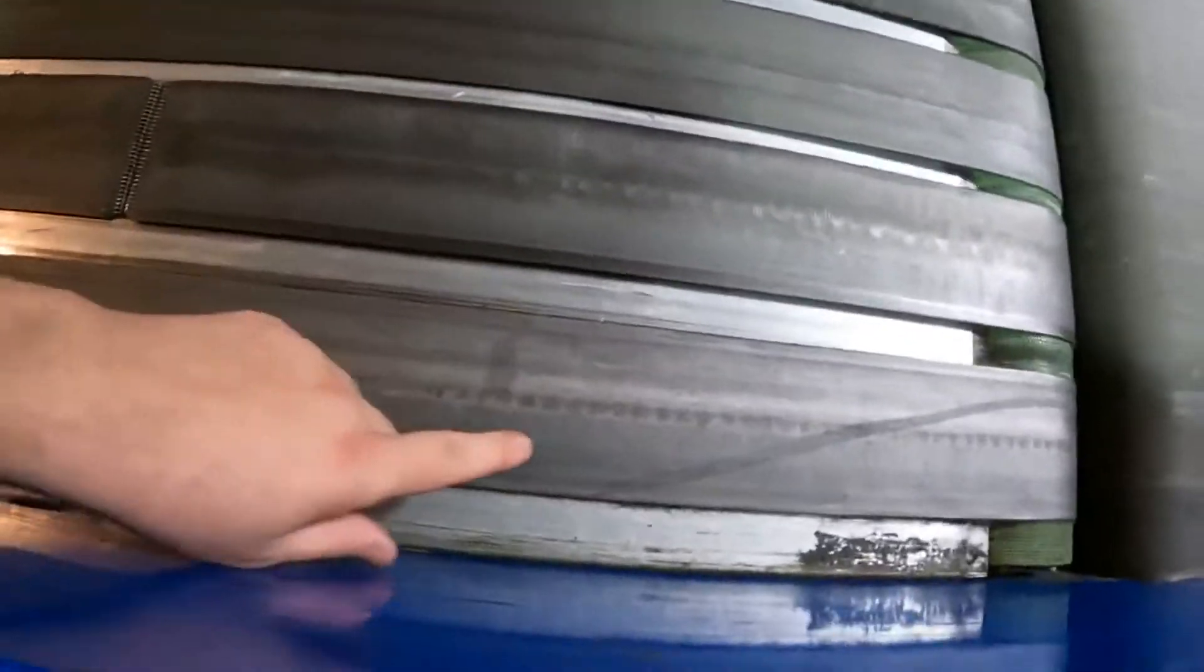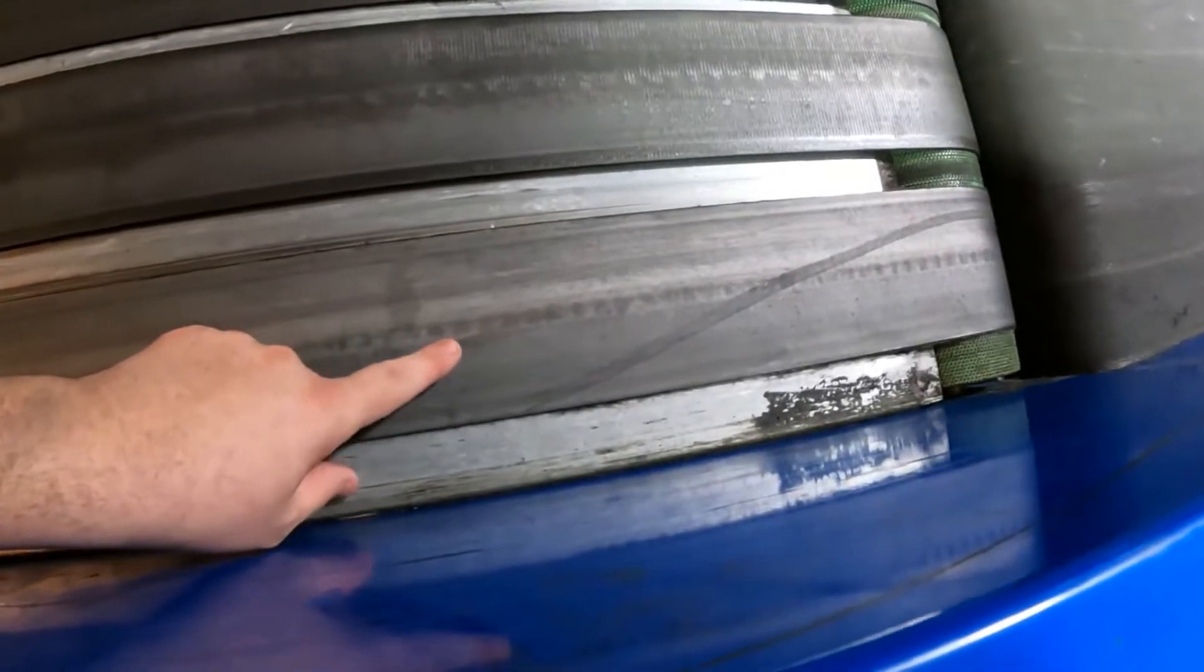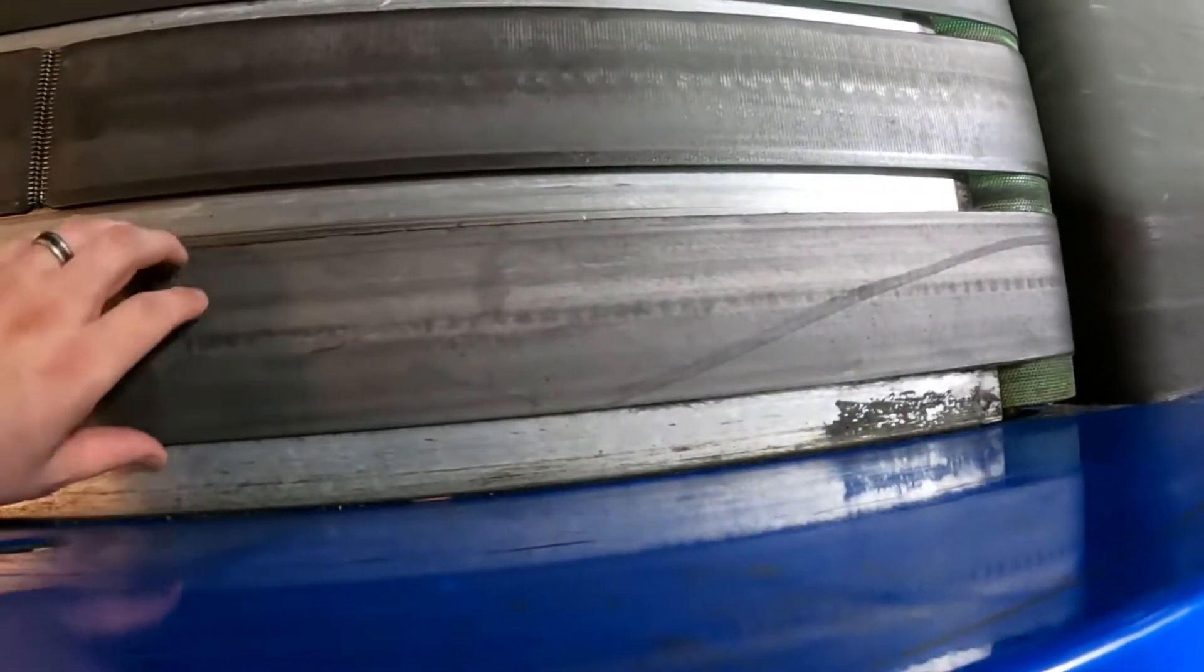You can tell when they've lost a rib because they start developing these black marks on the top to show the center guide has fallen off.